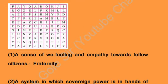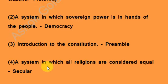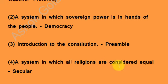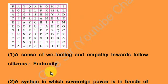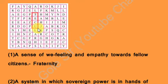The next word: a system in which all religions are considered equal. The system in which all religions are equal is called the secular system. We will find the word 'secular' right here in the grid.